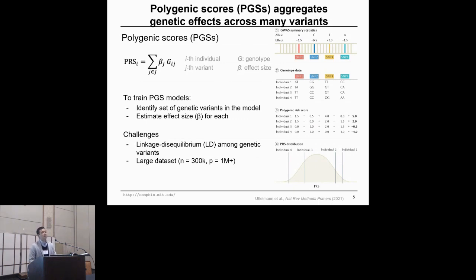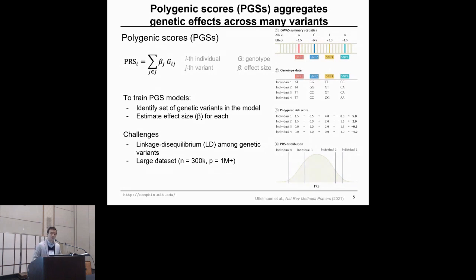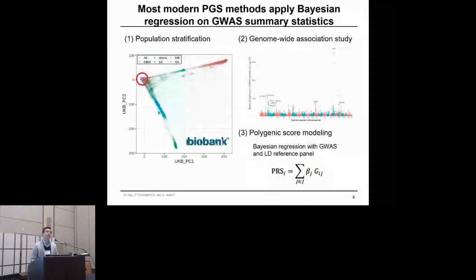There are some challenges when performing polygenic score analysis. Namely, linkage disequilibrium (LD) structure exists, meaning there are correlations across many SNPs, so it is necessary to select a non-redundant set of SNPs to avoid double-counting the same genetic loci. Another challenge is that large-scale datasets consisting of more than one million variants and hundreds of thousands of individuals are computationally constrained — it is not easy to load all that genetic data into memory, so you need to be innovative in designing the statistical model.